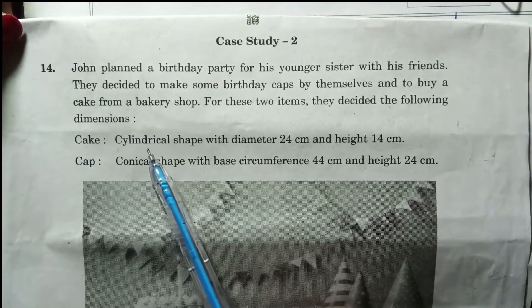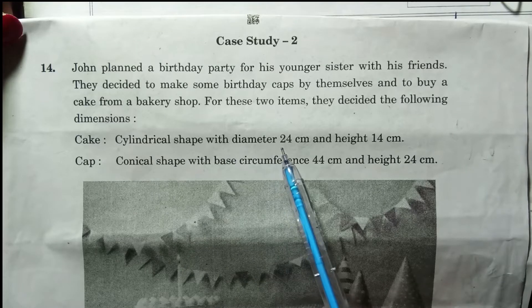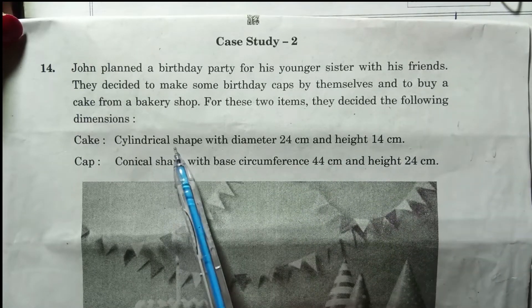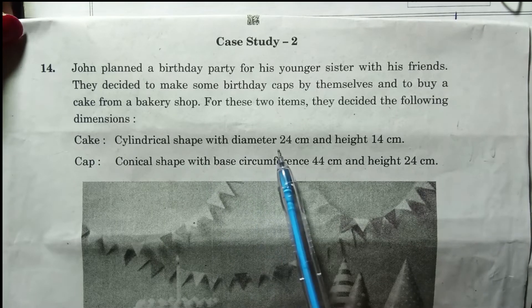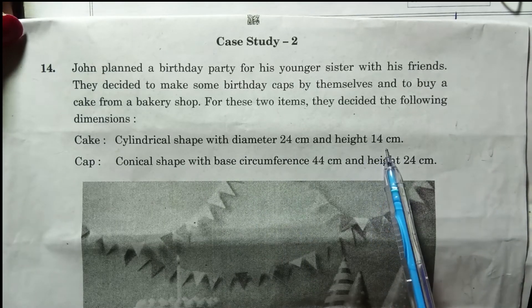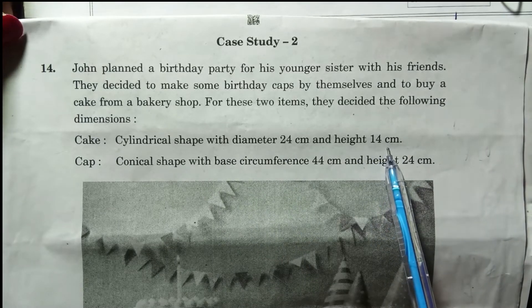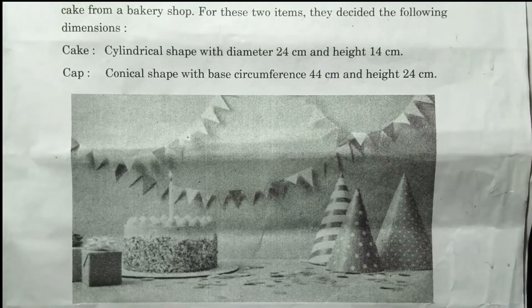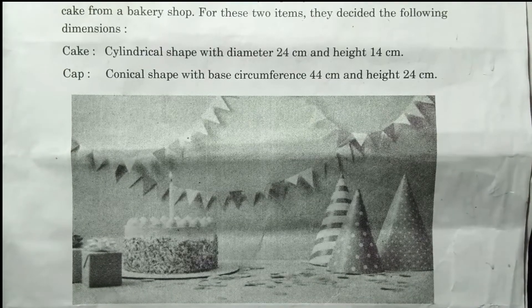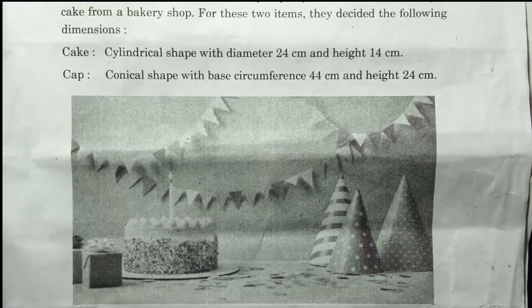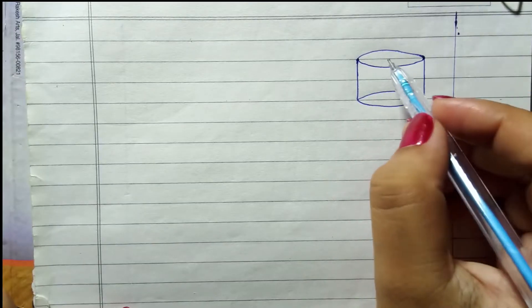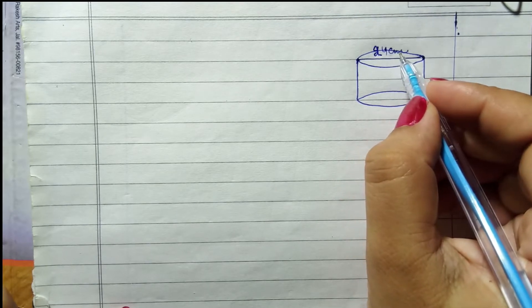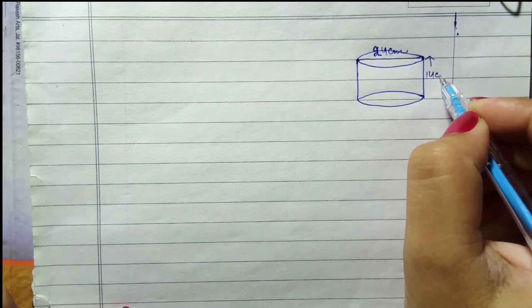Cake ke dihi kaonsei dimensions hai? Cylindrical shape with diameter 24 cm and height 14 cm. This is a cylindrical shape cake with diameter 24 cm and height 14 cm.